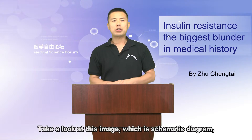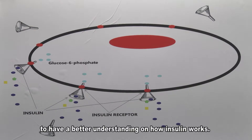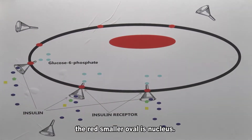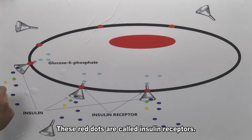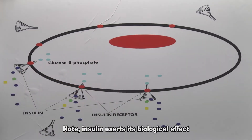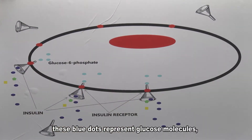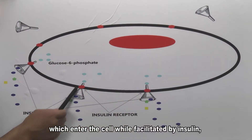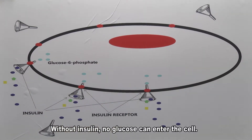Take a look at this image, which is a schematic diagram intended to give you a better understanding of how insulin works. This big oval represents a cell. The red smaller oval is a nucleus. These funnel-like objects are insulin. These red dots are called insulin receptors. Note: insulin exerts its biological effect only while it is docked on an insulin receptor. These blue dots represent glucose molecules which enter the cell while facilitated by insulin. Without insulin, no glucose can enter the cell.